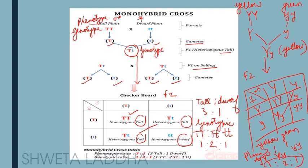As homework, carry out a monohybrid cross for a single trait — the position of the flower. If it is an axial flower, we know it is dominant. Cross it with another plant having an apical (terminal) flower, represented by small a small a. Draw a similar cross and obtain the genotypic and phenotypic ratio. I hope you have followed this — I have given you two examples; do the third one as homework.